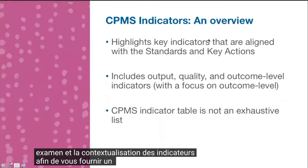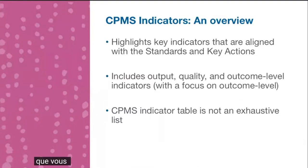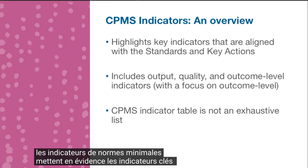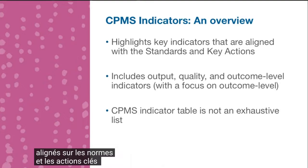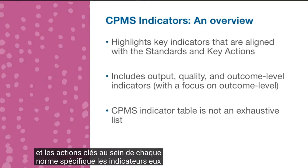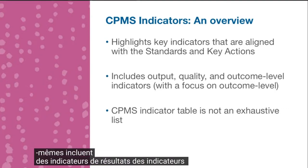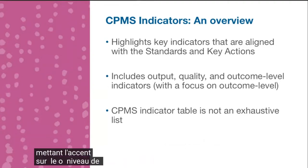To provide a brief overview of the Child Protection Minimum Standards Indicators, which you will likely already be familiar with: the Minimum Standards Indicators highlight key indicators that are aligned with the standards and the key actions within each specific standard. The indicators themselves include output indicators, quality indicators, and outcome level indicators, with a focus on the outcome level.